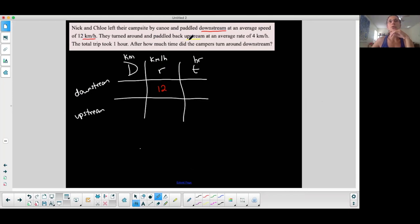Paddled upstream. Paddled upstream at an average rate. So I know the rate upstream is 4 kilometers per hour. The total trip took one hour. After how much time did the campers turn around downstream? So they left their campsite and paddled downstream and then they turned around and paddled upstream. So it looks like the distance that they traveled downstream was the same as traveling up, right?